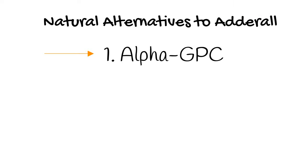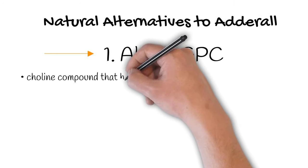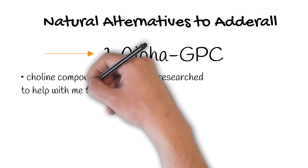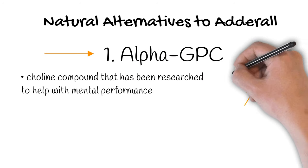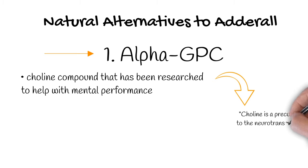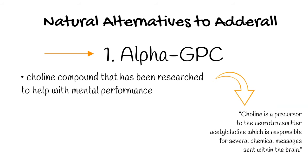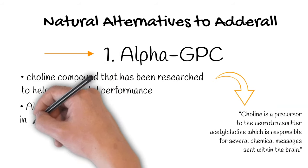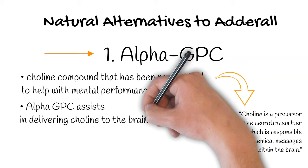The first one is Alpha-GPC. Alpha-GPC is a choline compound that has been researched to help with mental performance in different capacities. Choline is a precursor to the neurotransmitter acetylcholine, which is responsible for several chemical messages sent within the brain.